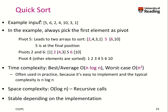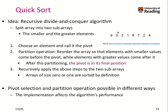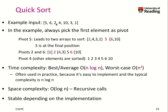Here is a detailed example. With input 5, 6, 2, 4, 10, 3, 1 — we pick the first element, 5, as the pivot. We split into elements smaller than 5: {2, 4, 3, 1}, the pivot 5 which is now in its final position, and elements larger: {6, 10}. We then recursively sort, taking pivot 2: the left sub-array becomes {1} and the right {4, 3}. Single-element arrays are already sorted. We then run it with pivot 4, and obtain the final sorted list.